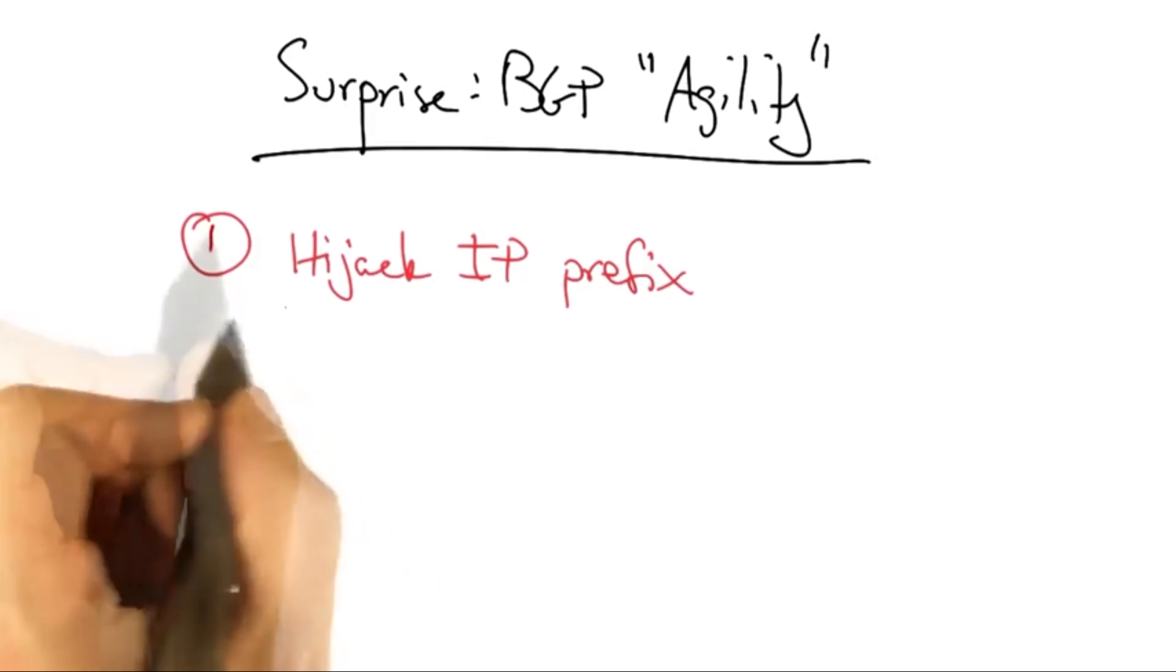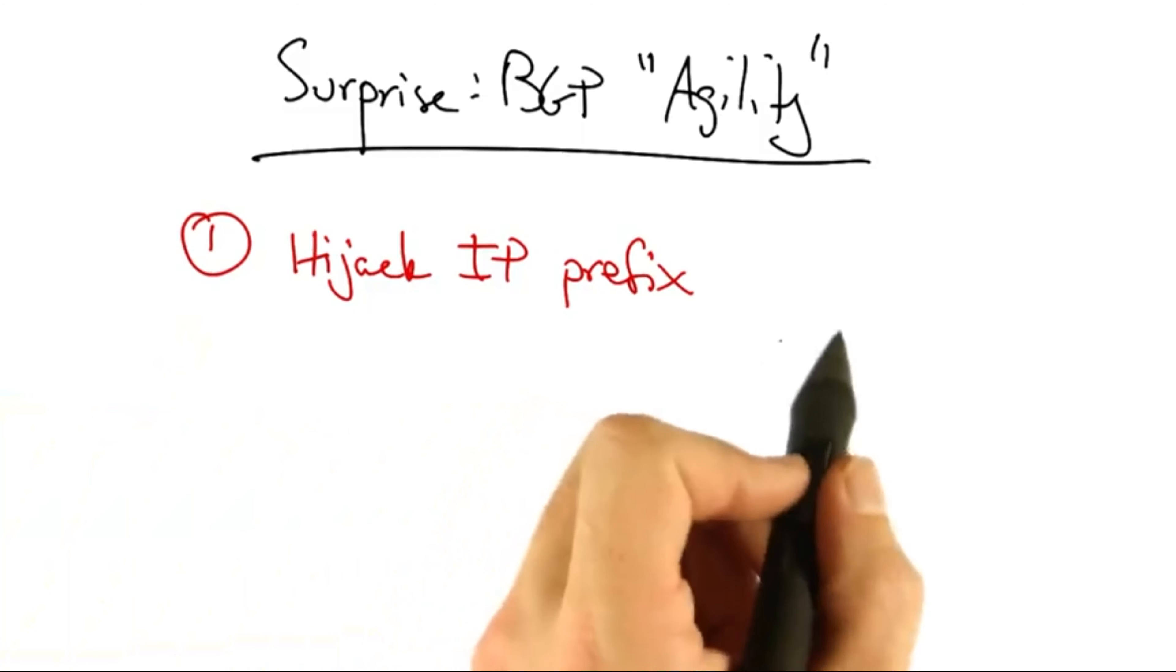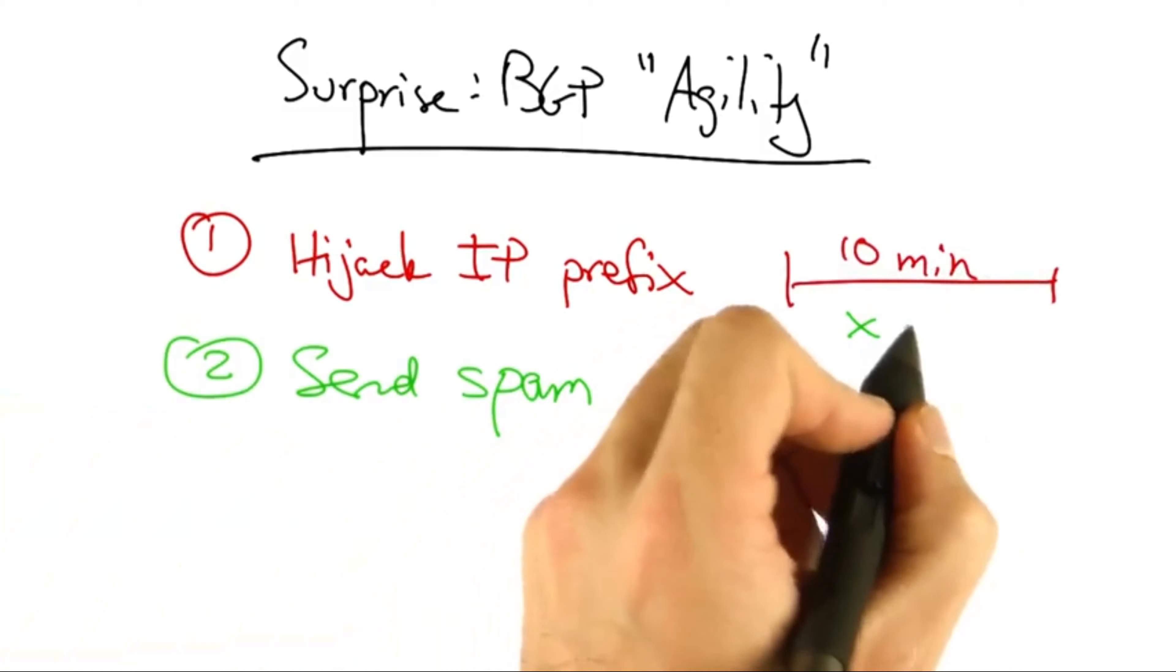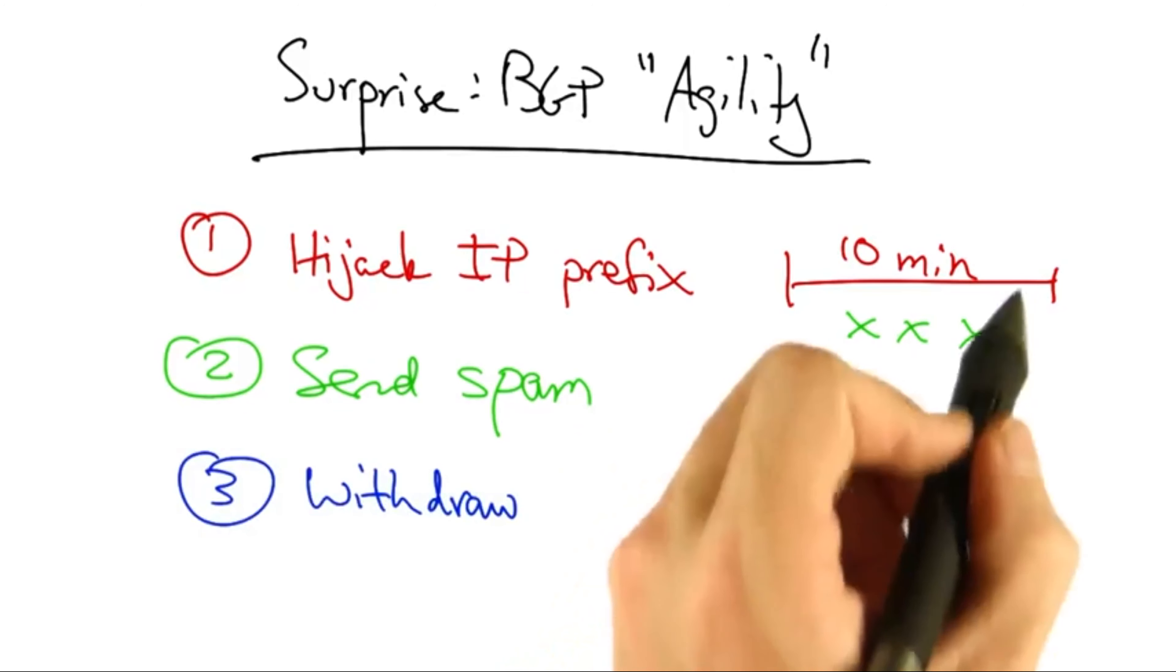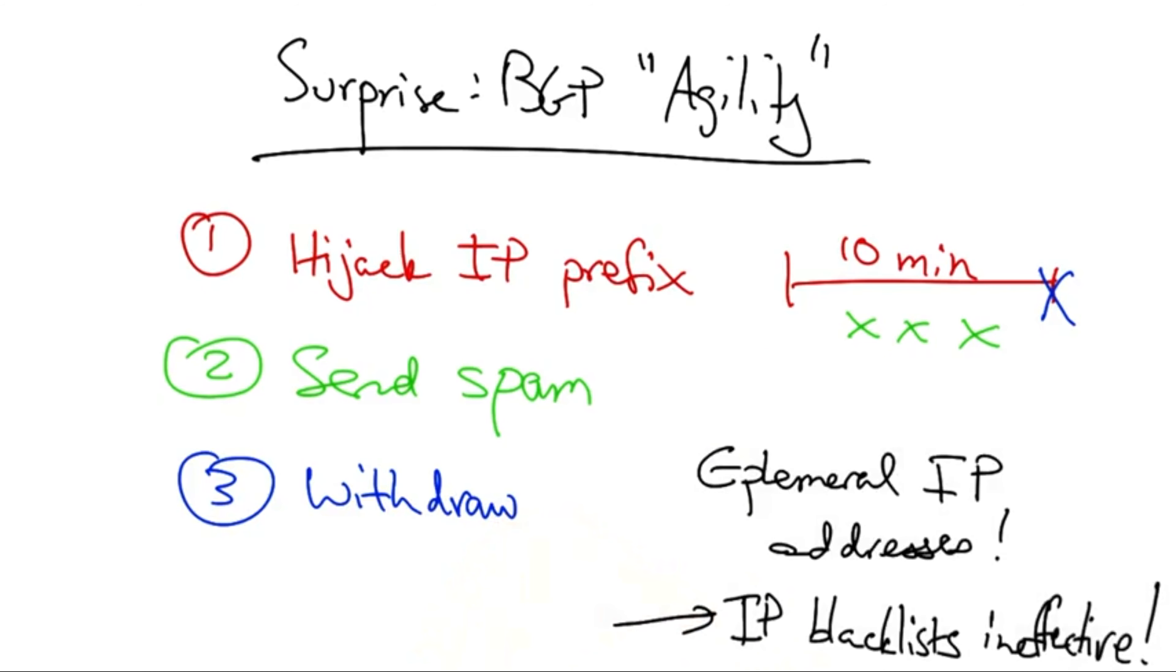For example, what we saw is that the spammer could hijack an IP prefix for a very short period of time, such as 10 minutes, send the spam or potentially multiple spam messages from IP addresses inside that IP prefix, and at the end of the attack, withdraw the prefix. This allows attackers to use ephemeral IP addresses, essentially rendering IP blacklists ineffective.